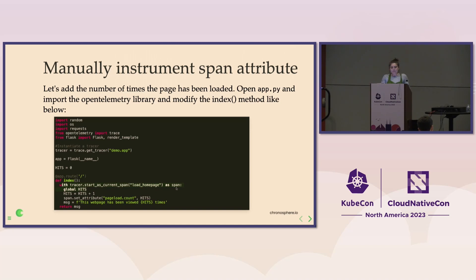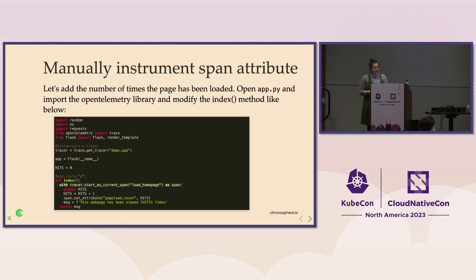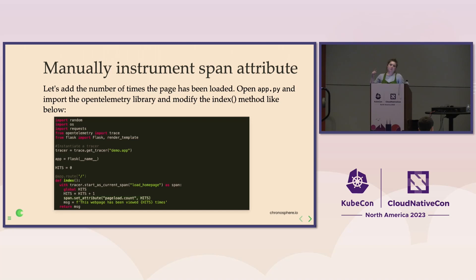When we're manually instrumenting, you've got to start the span yourself. We're going to say 'with tracer.start_as_current_span' — which means in this method we're going to start a new span right now. You should call it something meaningful; in this case 'load home page' works. We're going to reference that variable as span. The next line you'll add is span.set_attribute. Attributes are key-value pairs, so we'll call this 'pageload.count' and give it the value of hits, which is how many times that page has been loaded.